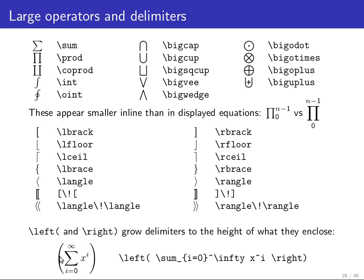In order to get very large parentheses, you use the left and right macros. So if you have a larger object, for example, here a sum from zero to infinity of x to the power i, then you surround these with backslash left open parenthesis, backslash right closing parenthesis. And the left and right macros will automatically measure how large is this box that has been typeset in between them and then they will automatically choose the right size of parenthesis to enclose this properly.